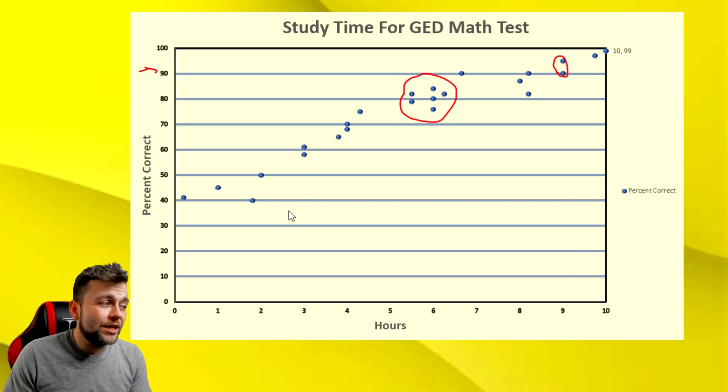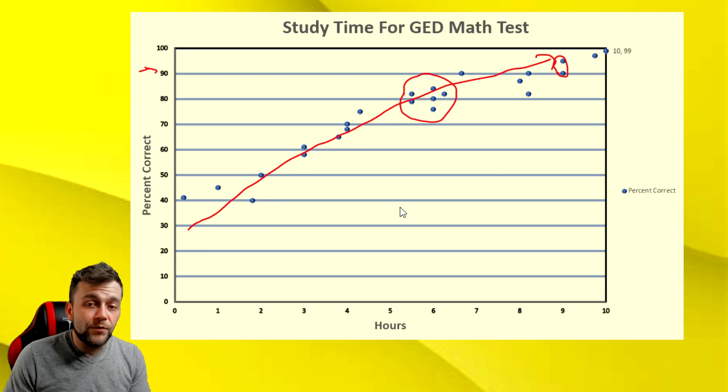Scatter plots are pretty nice. It's a really nice tool to show trend lines. And like I said, positive correlation that is moving up from left to right. That is a positive relationship between percent correct on a test and number of hours study.